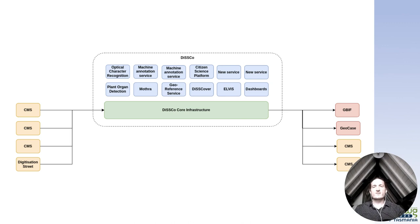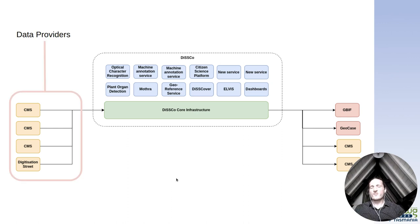I try to capture this in this image. As DISCO we capture data from all different data providers, here on the left. Preferably we get the data from the source, which could be a collection management system or a digitization street. However, as most systems also expose data through TDWG standards, such as Darwin Core and ABCDEFG, we focused on those initially.